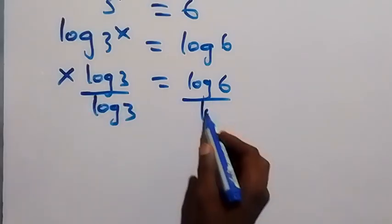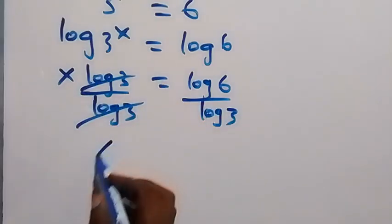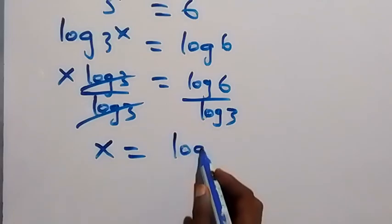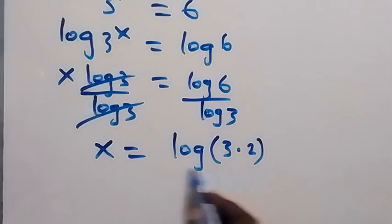Now then let's divide both sides by log 3. Log 3 cancels log 3, we have x left, which equals log 6. We can write this as log(3 × 2) over log 3.